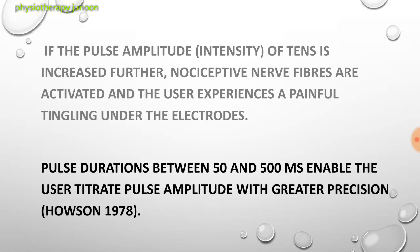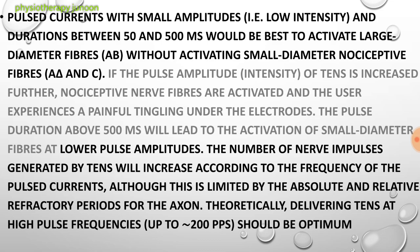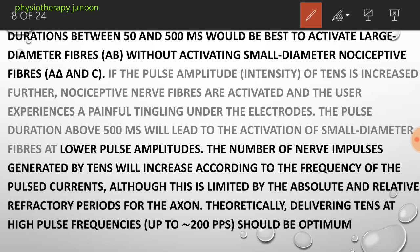If the pulse amplitude of TENS is increased further, non-nociceptive nerve fibers are activated and the user experiences a painful tingling under the electrodes. Pulse duration between 50 and 500 microseconds enables the user to adjust pulse amplitude with greater precision. This was studied by Hossens in 1978. A pulse current with small amplitude and duration between 50 to 500 microseconds best activates large diameter fibers, specifically A-beta fibers, and not A-delta and C fibers.